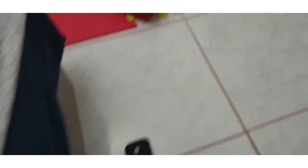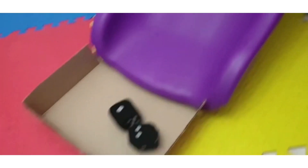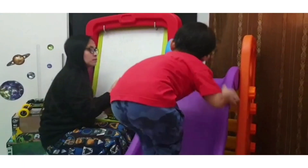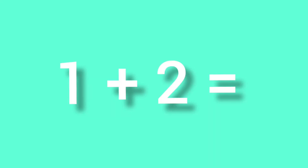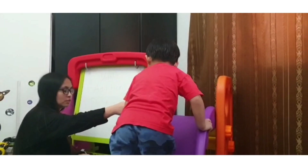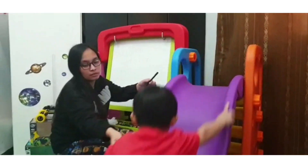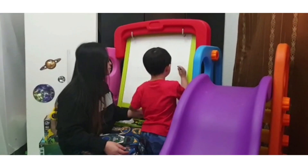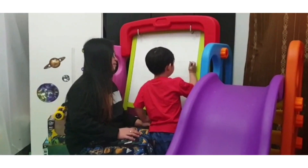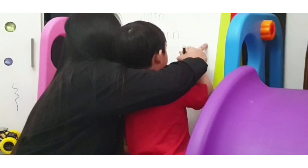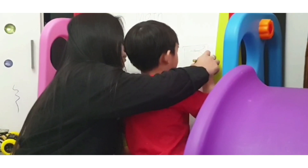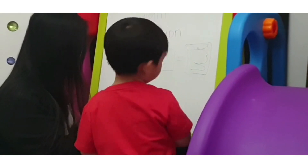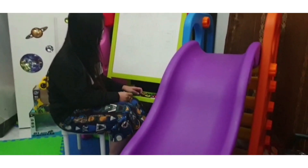How many is that? One. One. And two. One plus two equals? Three. Very good. Can you please write number three on the board? Come, come here. Very good, boy. Can you please write number three? How to write number three? From here. Very good. One plus two is equals to three.